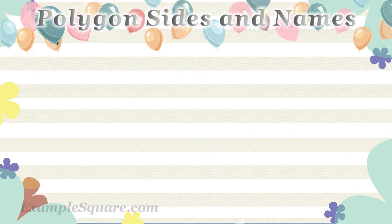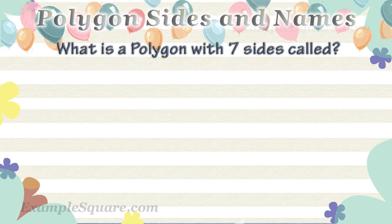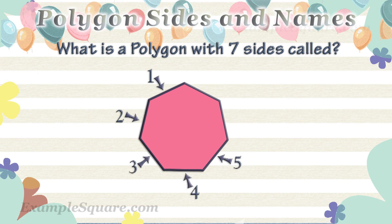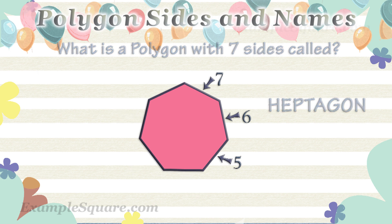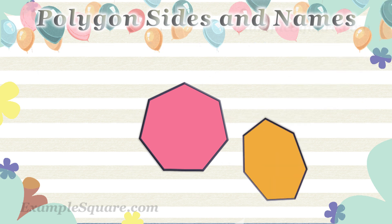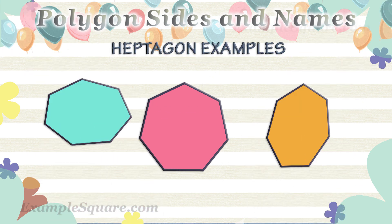What is a polygon with 7 sides called? A polygon with 7 sides is called a heptagon. These are some examples of hexagons.